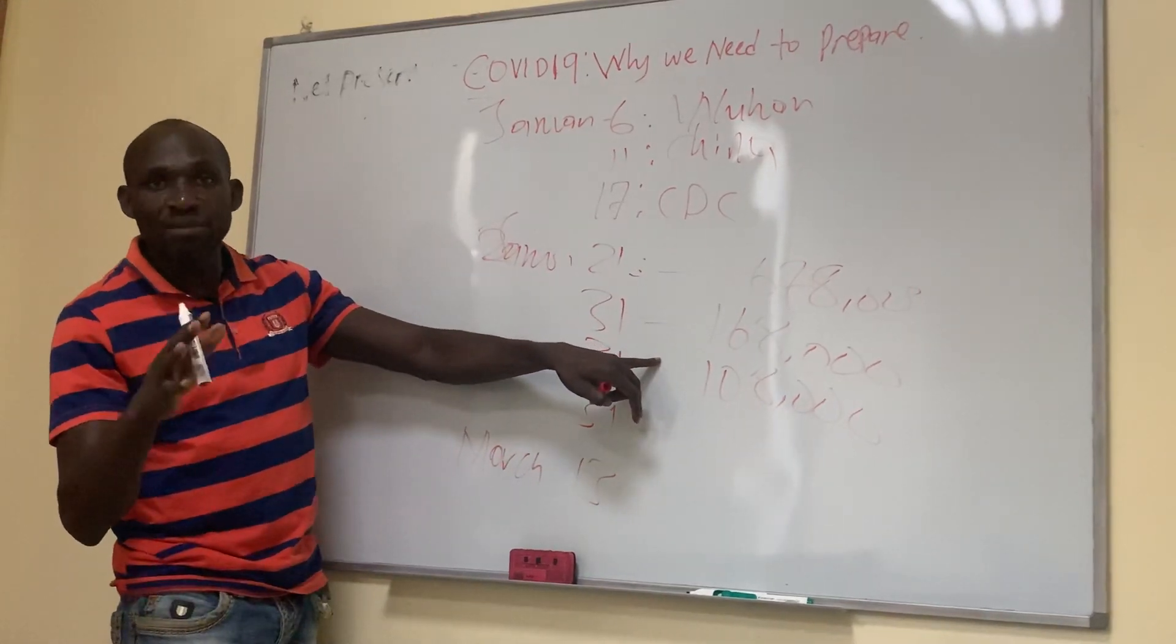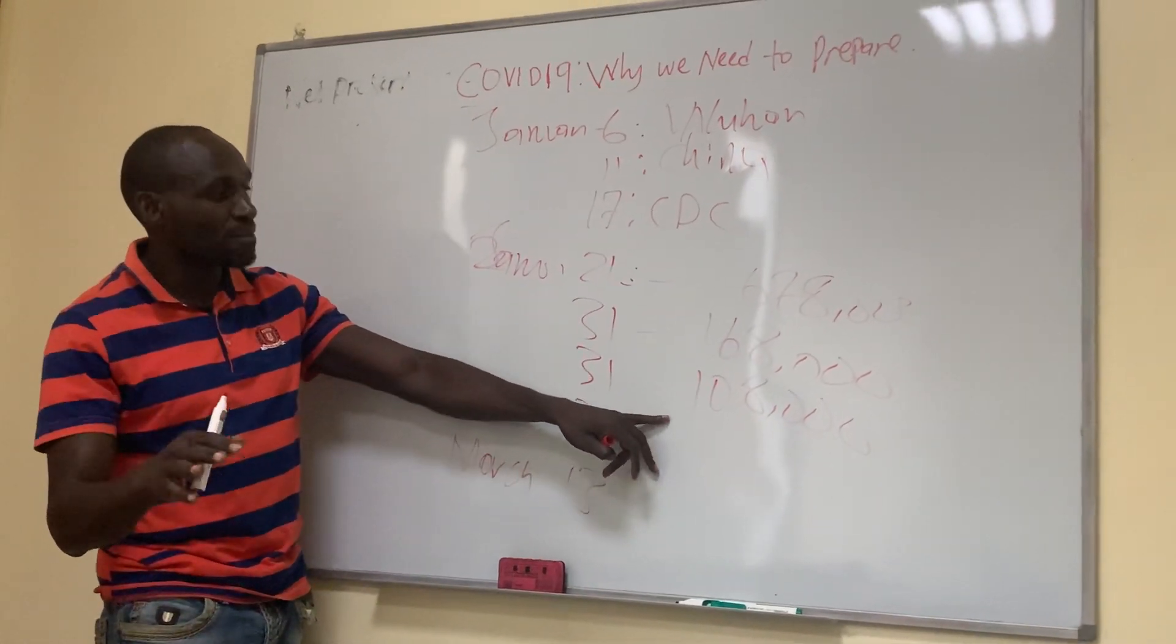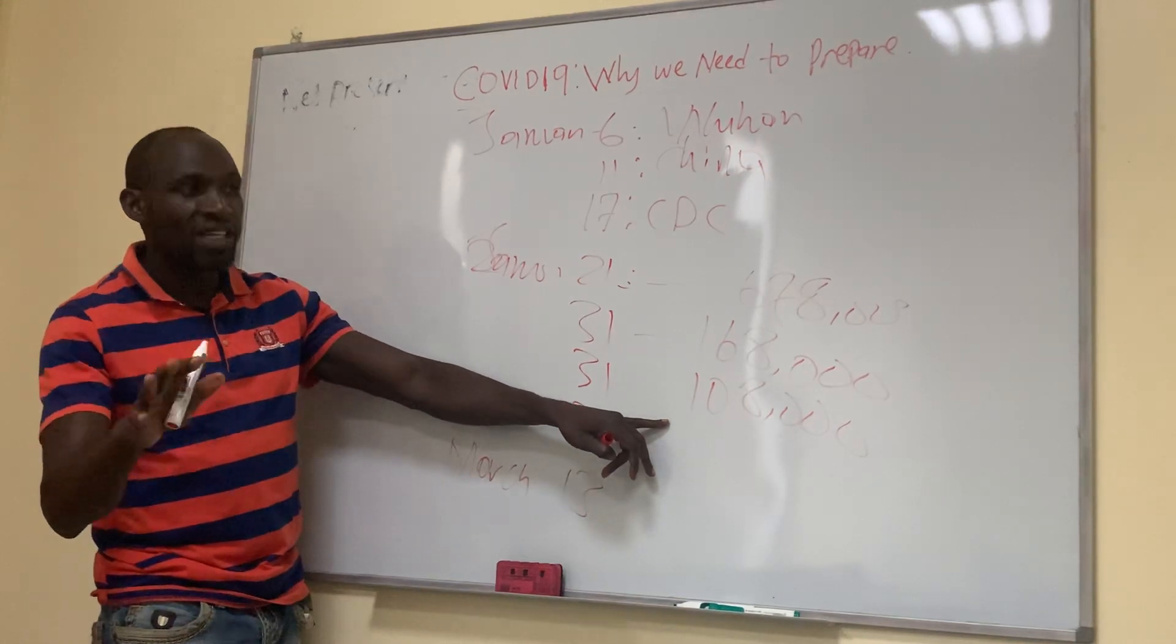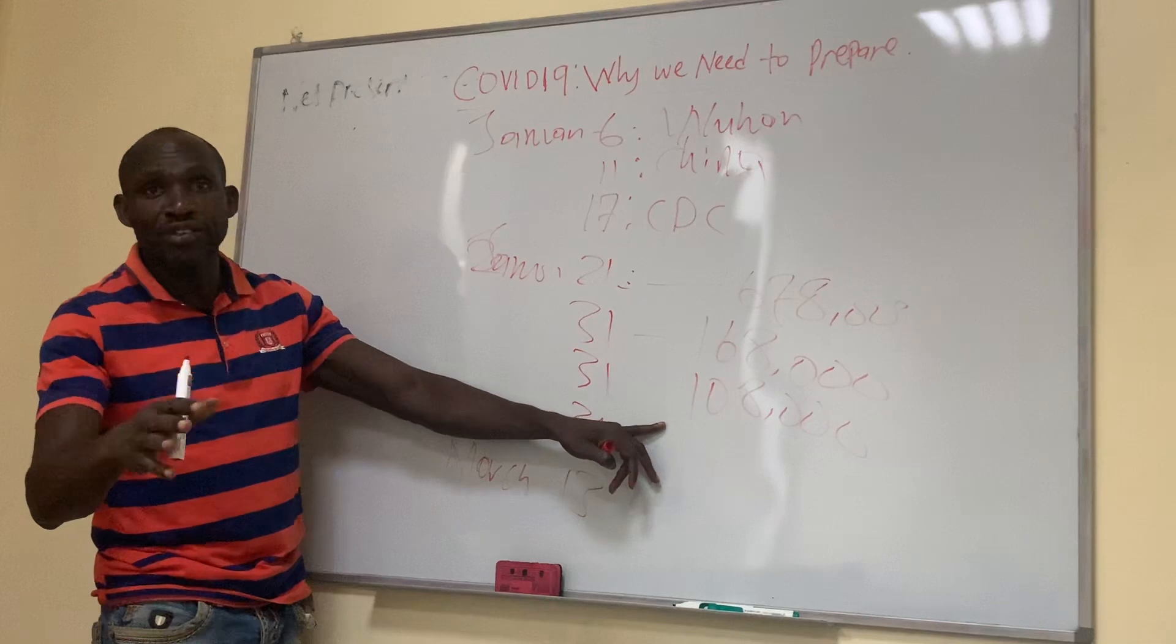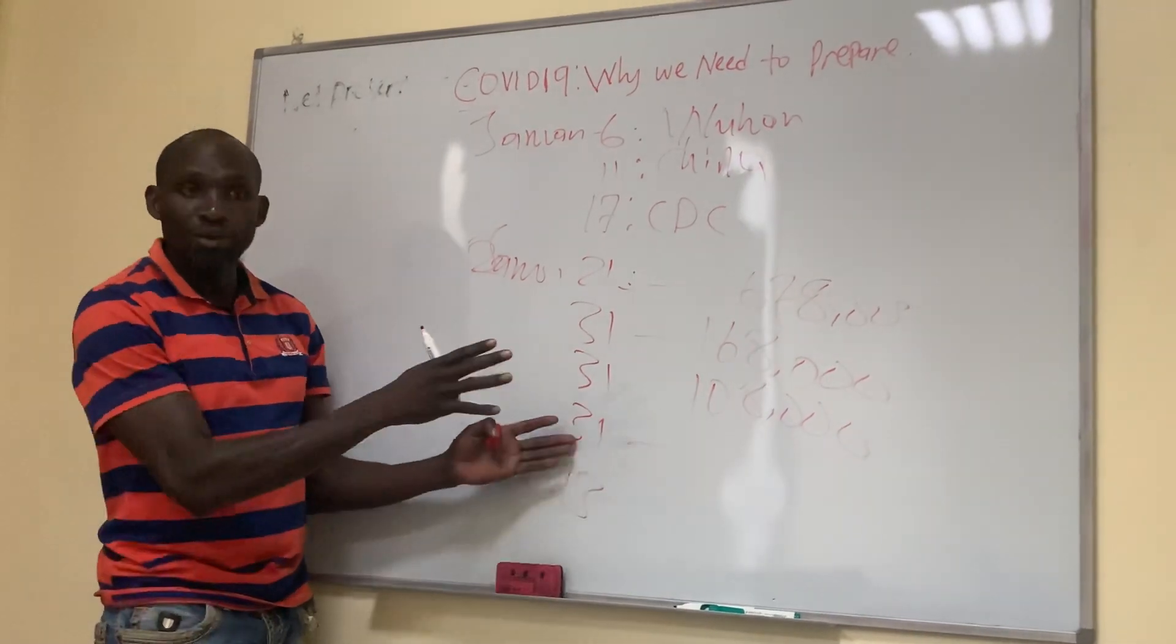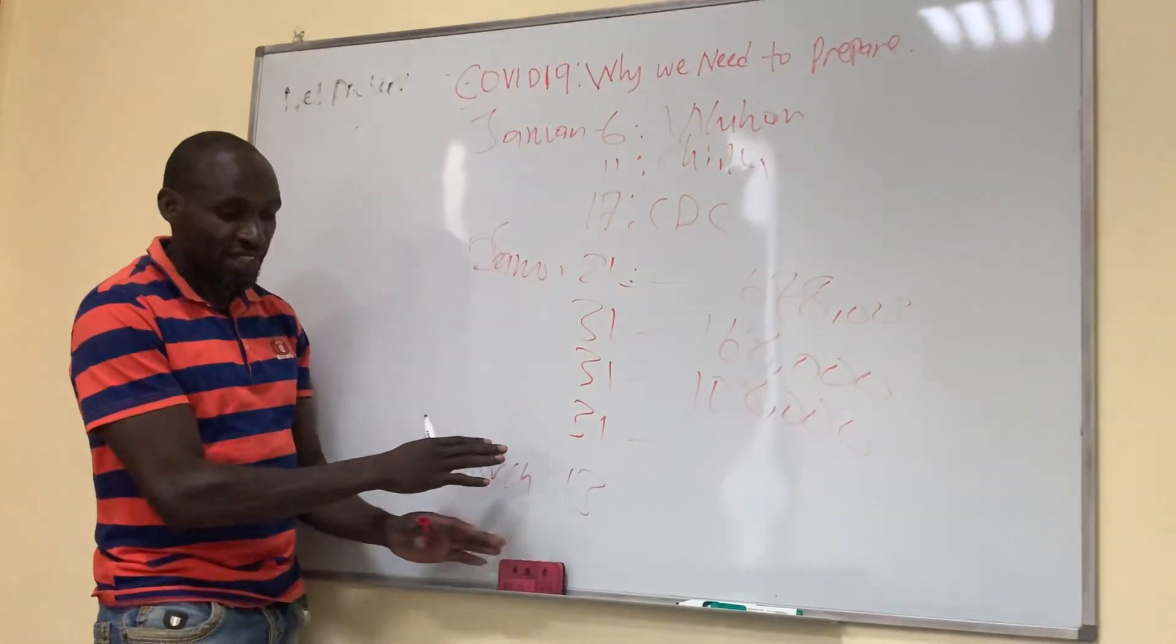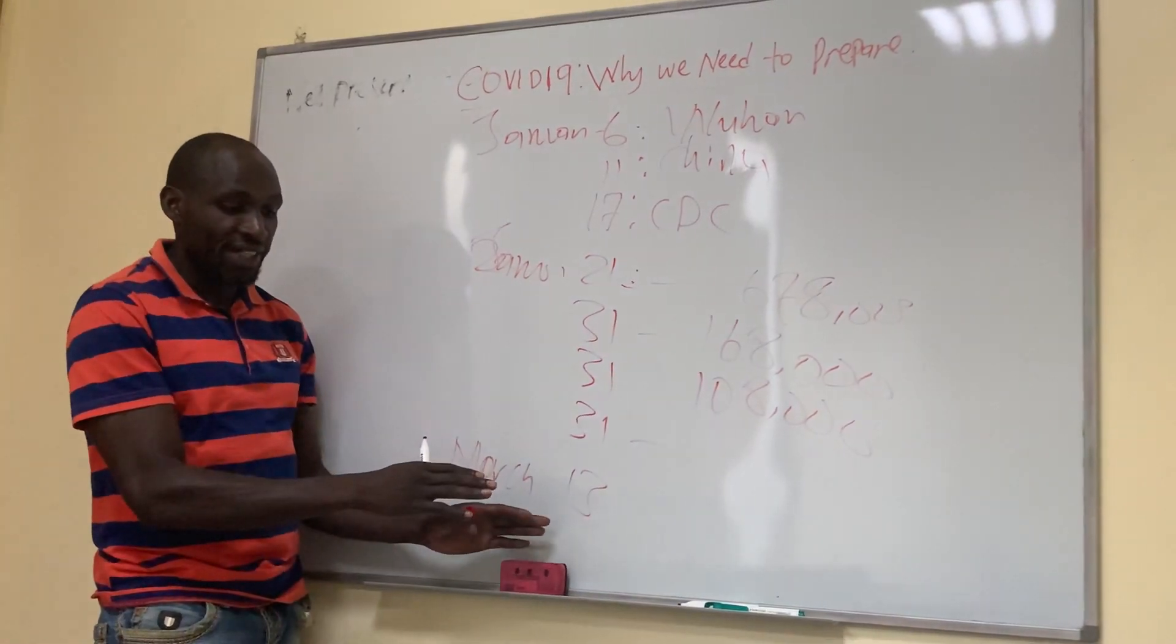Italy has like 60 million population close to Kenya. Spain has almost 48 million people. So we are very close. Don't be deceived by population factors. Population is very clear.